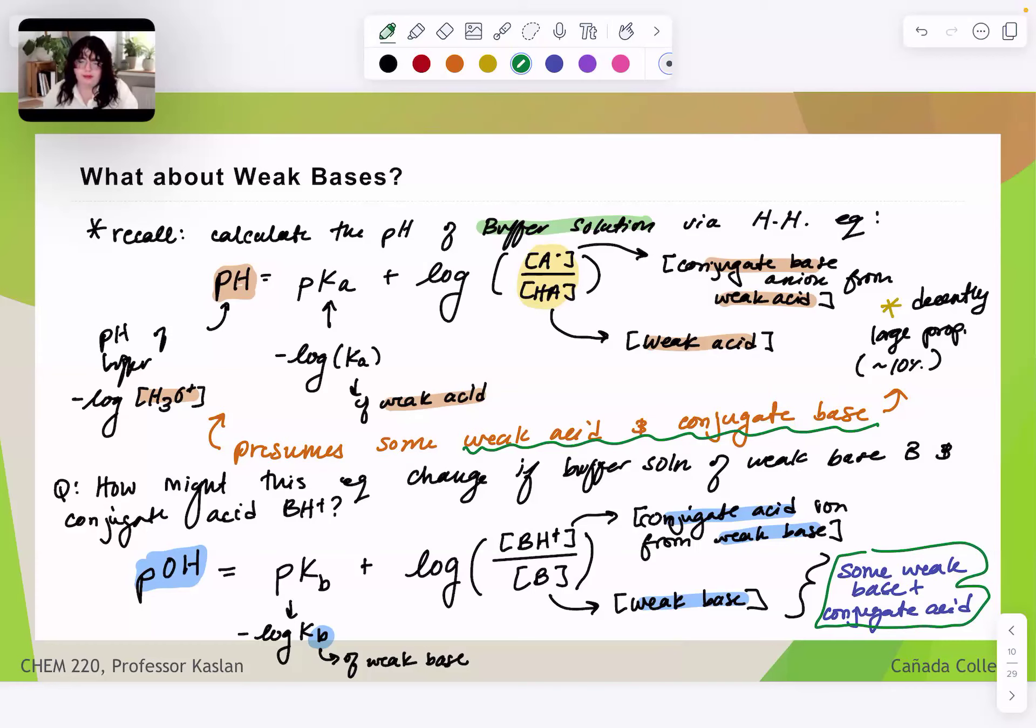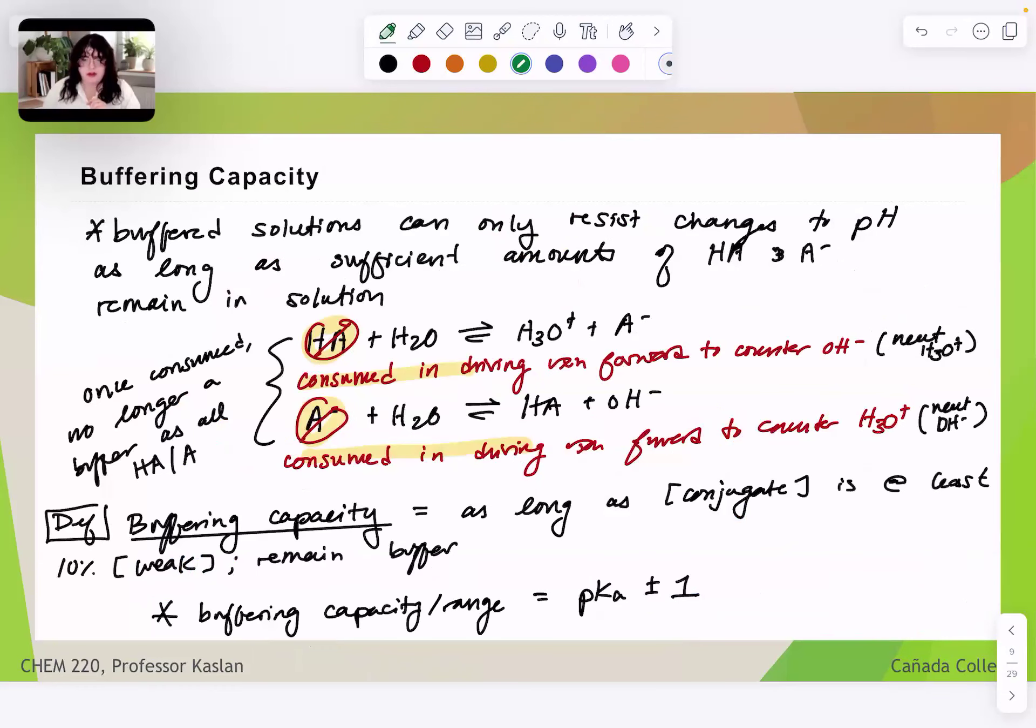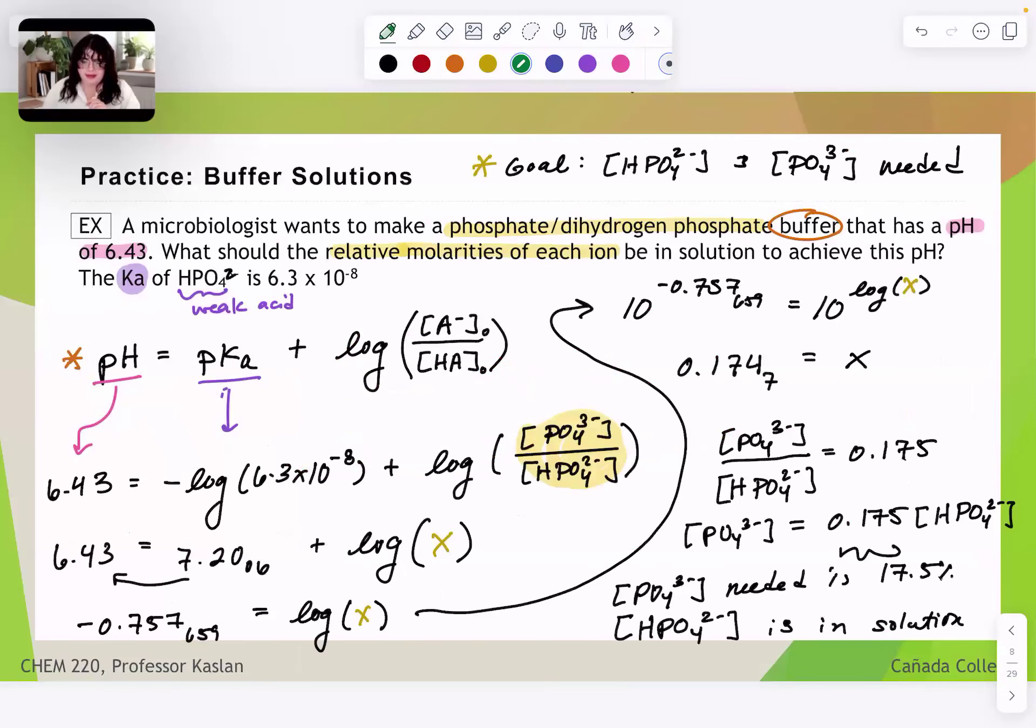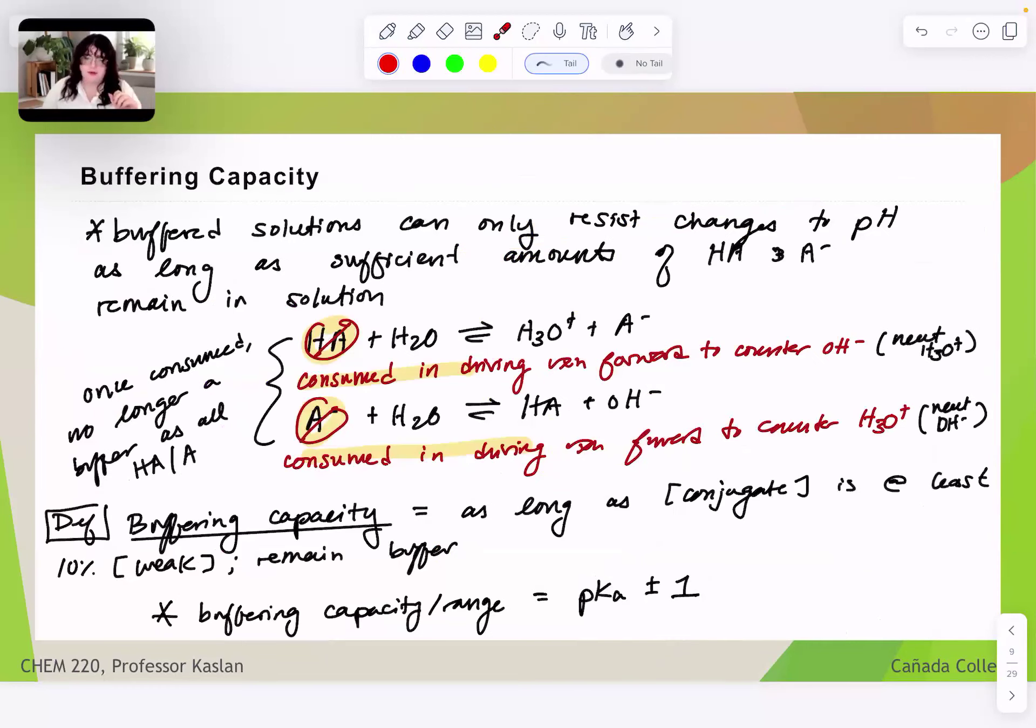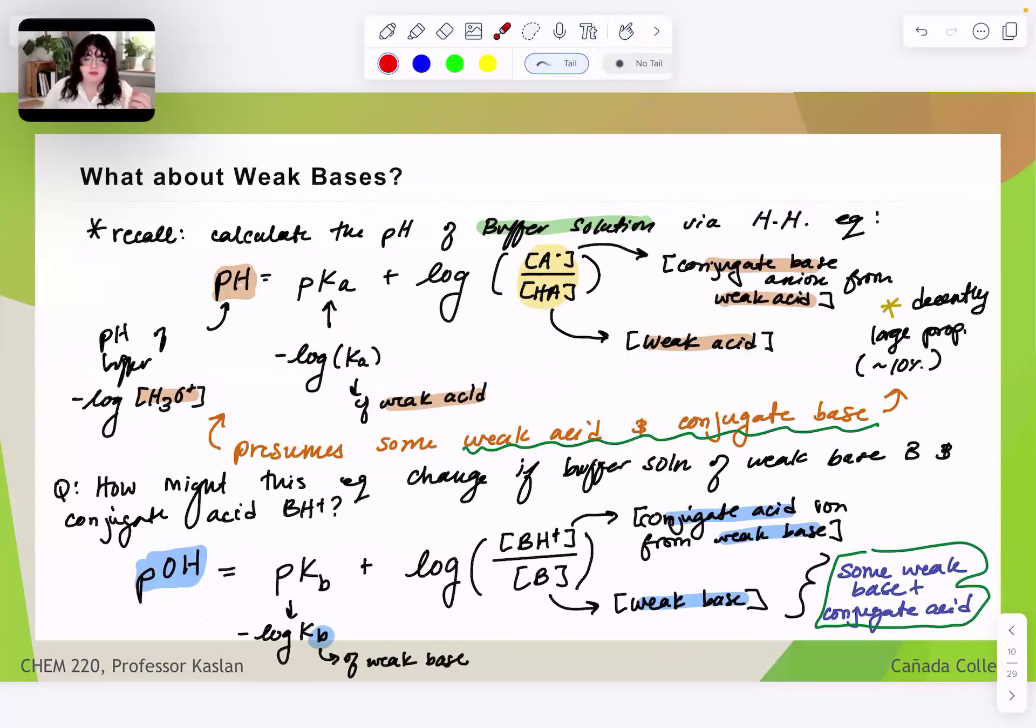Okay. So this was a little short video because it was wrapping up our conversation about buffers at large. We talked about buffering capacity or the ability that we can predict for a buffered solution to resist changes to pH. We have calculated, using the Henderson-Hasselbalch equation, information about relative solution concentrations. I could ask you to solve for any term in the Henderson-Hasselbalch equation if we're given a weak acid buffer and or a weak base buffer, given here in blue.